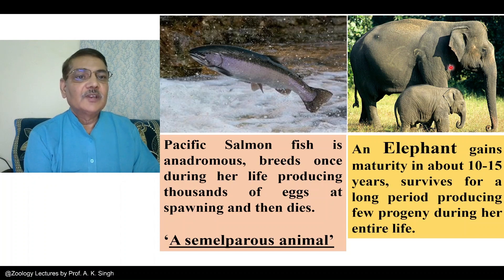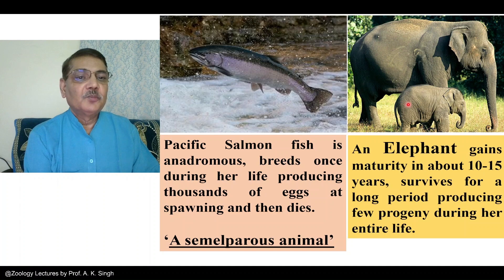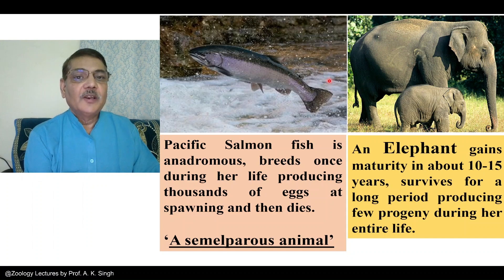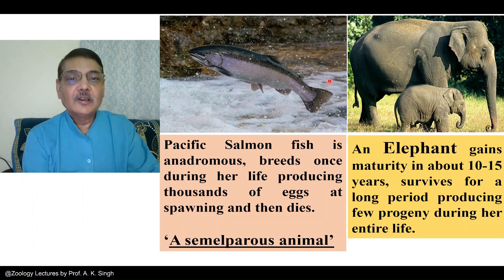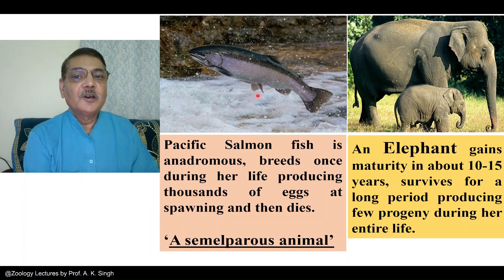The other animal shown is an elephant. This animal matures in about 10 to 15 years, survives for several years, and produces just a few progeny — a few babies — during its entire lifetime. So we find that one animal survives for a short period of time producing a large number of progeny, whereas the other survives for a very long period of time producing just a few.